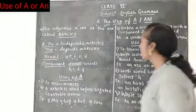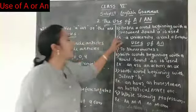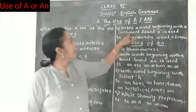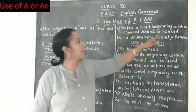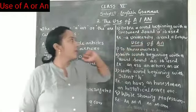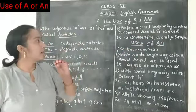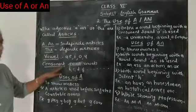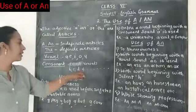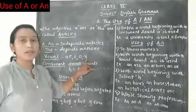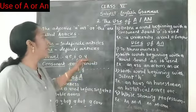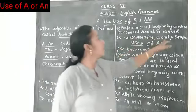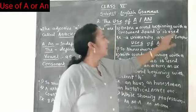The third rule is: A is used before a word beginning with a consonant sound. Now consonant sounds — I already told you that consonants are B, C, D, F and so on. But take the example of the word 'university' — it starts with U, which is a vowel.